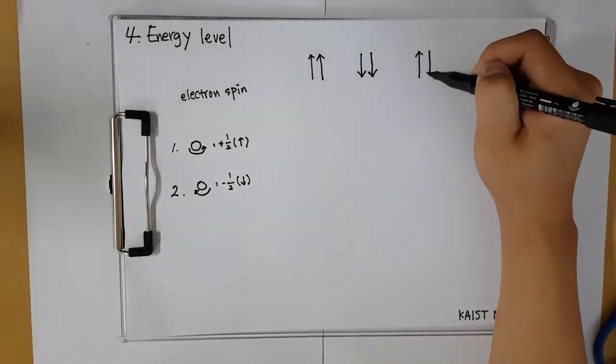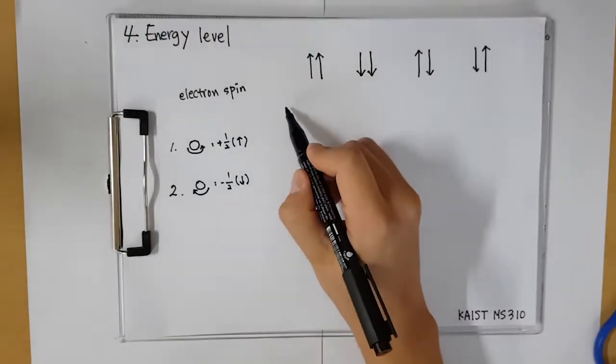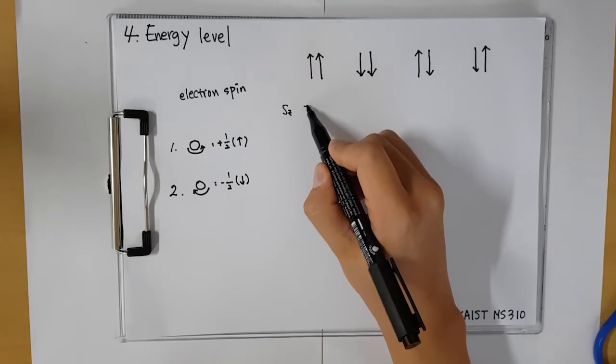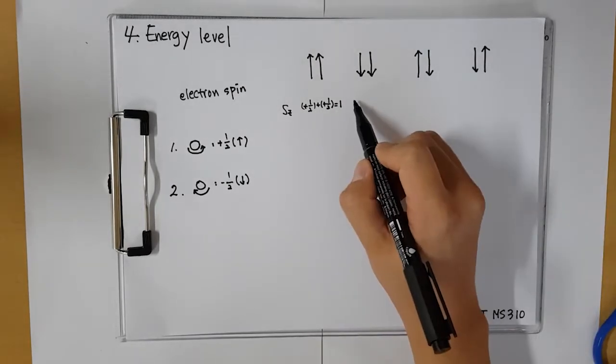Up-up, down-down, up-down, and down-up. In first two cases, two electron spin directions are parallel, so the spin z components are each one and minus one.